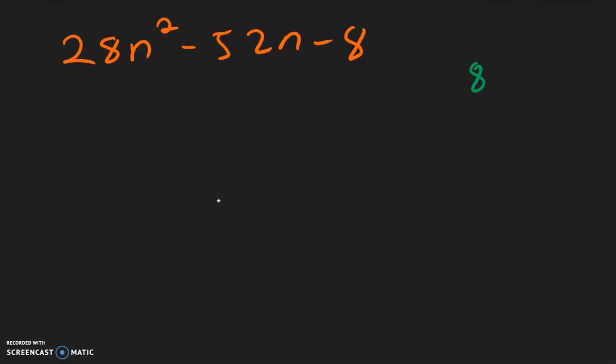So let's see what are the factors of 8. 8 is 2 times 4. So let's start with the bigger factor and see if we can do that. So 28 divided by 4, okay, that works. And 52 divided by 4 works as well. So I know we can have a 4 on the outside.